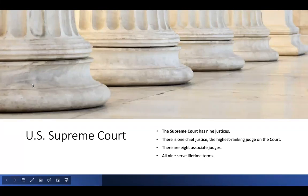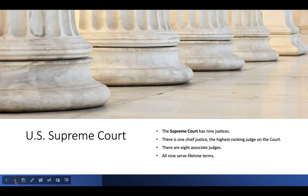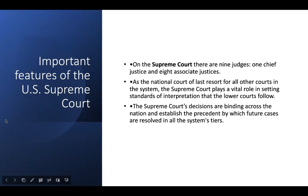Then we have the U.S. Supreme Court, the highest court. There are nine justices — one chief justice, the highest ranking, and eight associate judges. Because they're federal judges, they have lifetime terms. The Supreme Court is the court of last resort for all other courts in the federal system, and really in the United States. It plays a vital role in setting standards of interpretation that lower courts follow. Supreme Court decisions are binding across the nation and establish the precedent by which future cases are resolved.